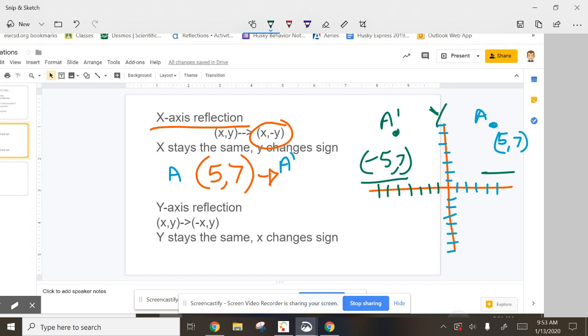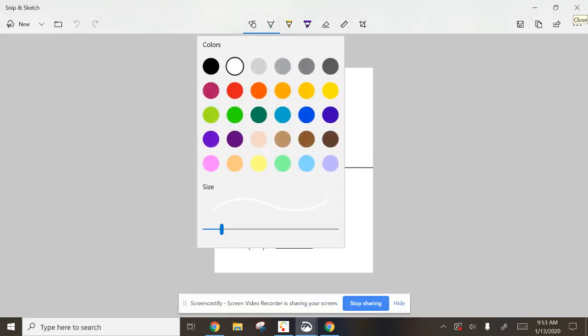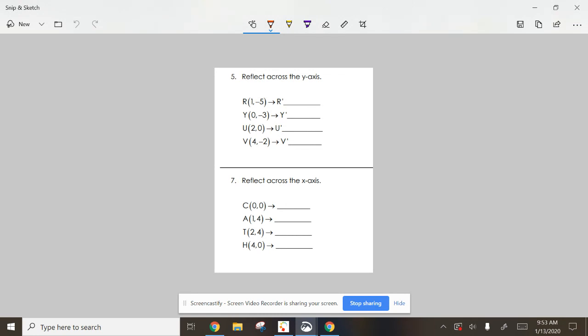Let me show you one more thing. This is actually two homework problems. If I'm looking at this one, it says reflected across the Y axis. So the Y is going to stay the same. Look at all these Y values right here—those are going to stay the same. So this is going to be negative 5, negative 3, 0, and negative 2. What happens with the X's? These are the ones that are going to change, so it's going to be 1, 0, 2, and 4.